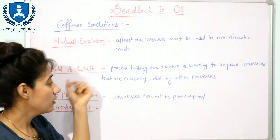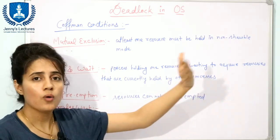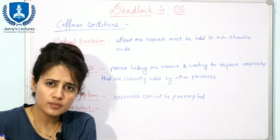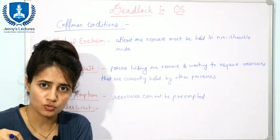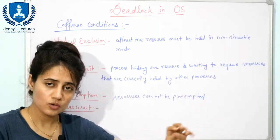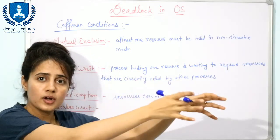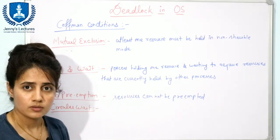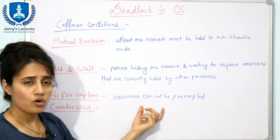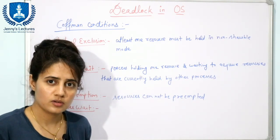The second condition is hold and wait: a process must be holding some resource and waiting to acquire other resources currently held by other processes. A process can hold resources R1 and R2 while waiting for R3 and R4. Third is no preemption: resources cannot be preempted — if a process is holding a resource, we cannot forcefully take it away. Like with the drawing book and pencil example, forcefully taking a resource would prevent deadlock, but that is not allowed.